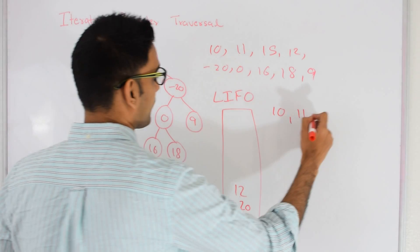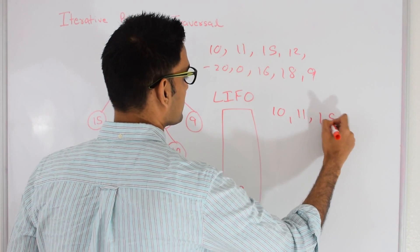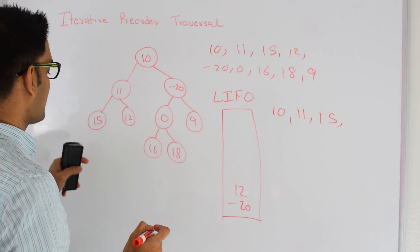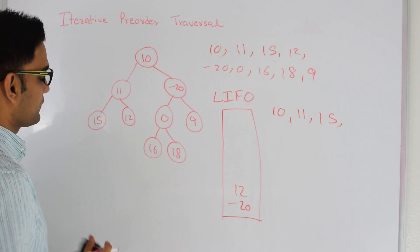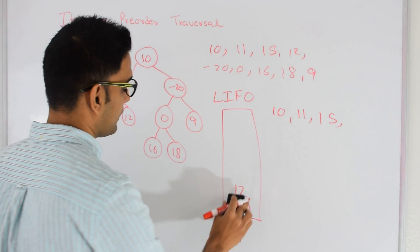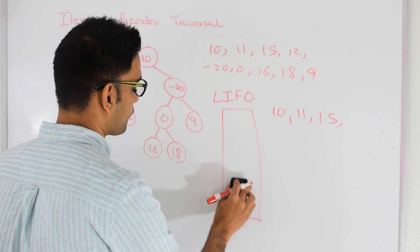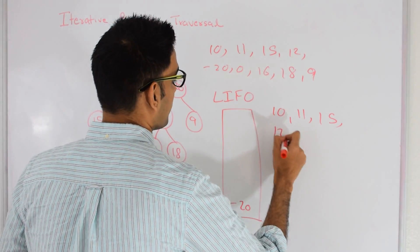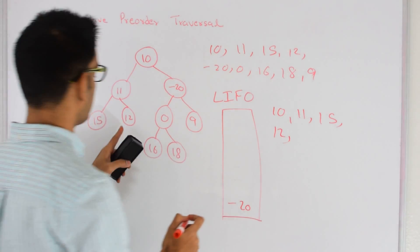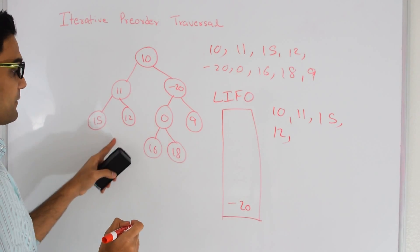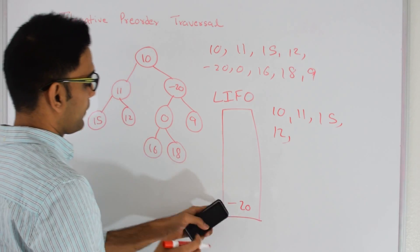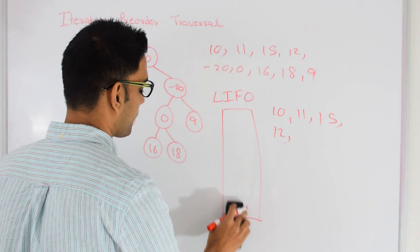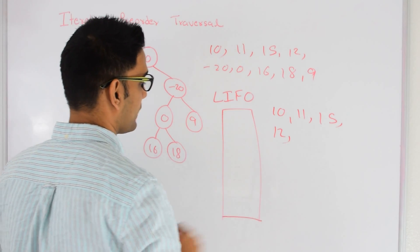We print 11 first, then we check if 11 has a right child — it does, so we put that into the stack, and if it has a left child we put that into the stack too. Now we again pop out from the stack — so 15 comes out. We print 15 first. 15 doesn't have a right or left child, so we go to 12. 12 pops out, we print 12, and again 12 doesn't have left or right child.